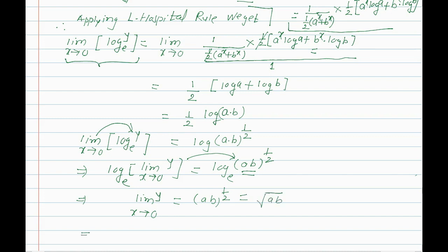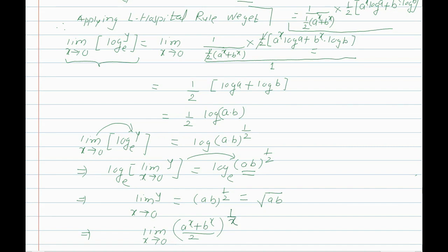Since log of [limit x→0 of y] = log(ab)^(1/2), we get limit x tending to 0 of y = (ab)^(1/2) = √(ab). Since y is [(a^x + b^x)/2]^(1/x), the final answer is the geometric mean √(ab), that is (ab)^(1/2).